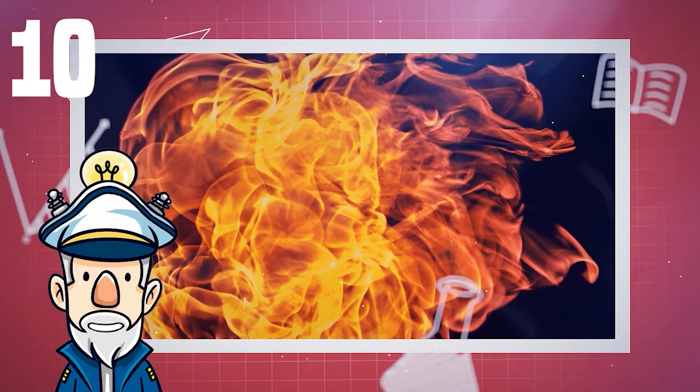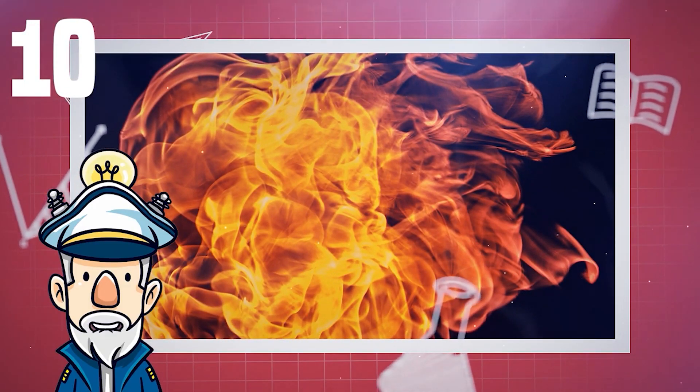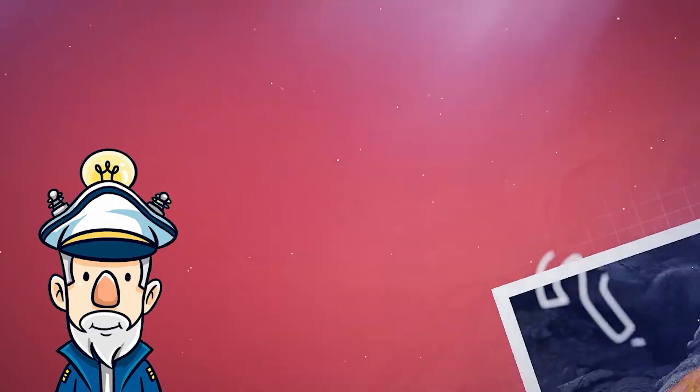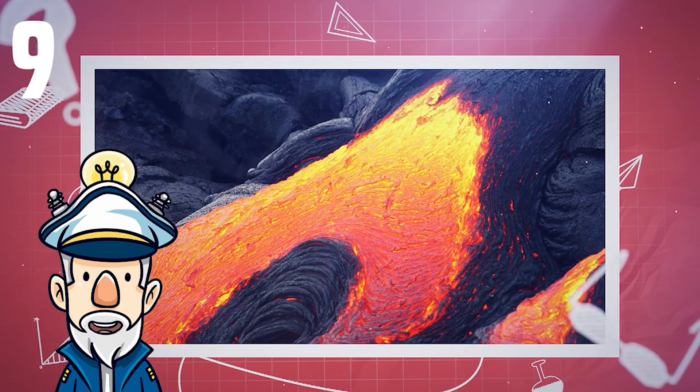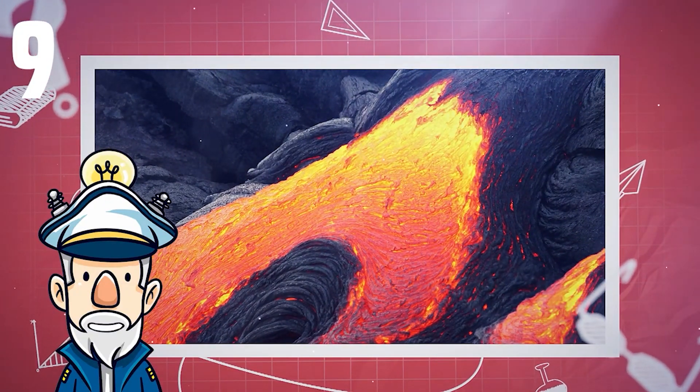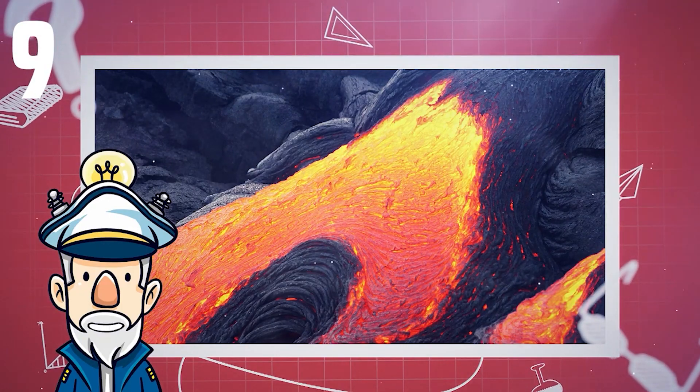Number 10: The word volcano originally comes from the name of the Roman god of fire, Vulcan. Number 9: Hot liquid rock under the Earth's surface is known as magma. It's called lava after it comes out of a volcano.